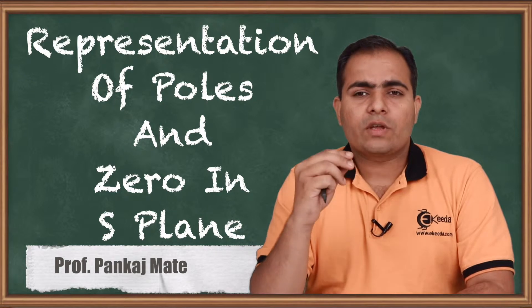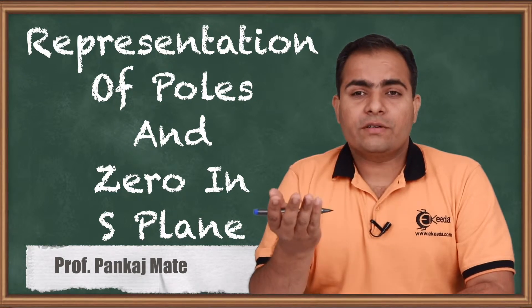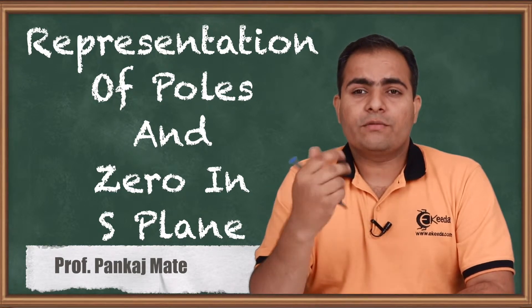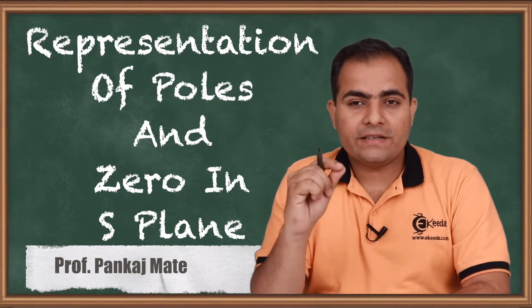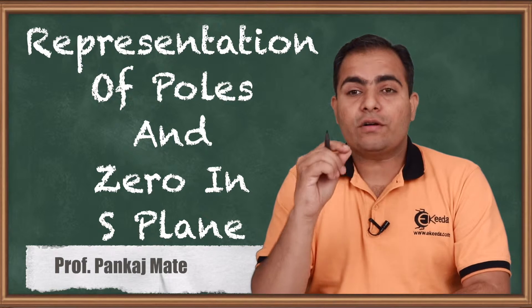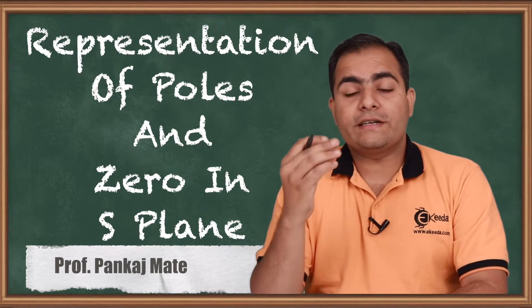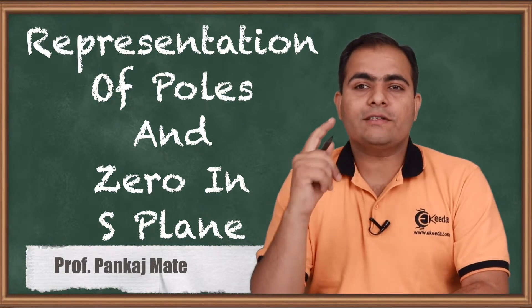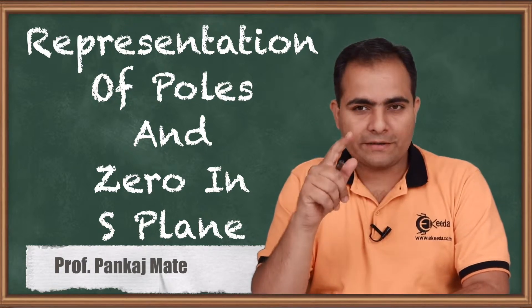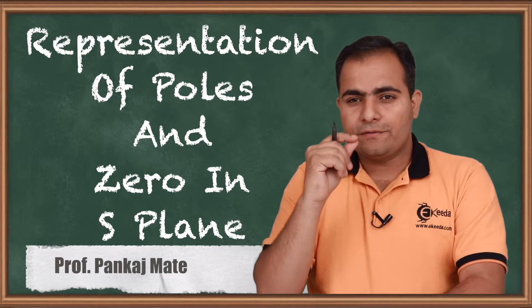The important question is: what are poles and what are zeros? Basically, poles are always placed in the denominator, whereas zeros are always placed in the numerator.